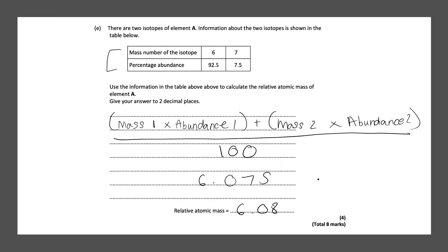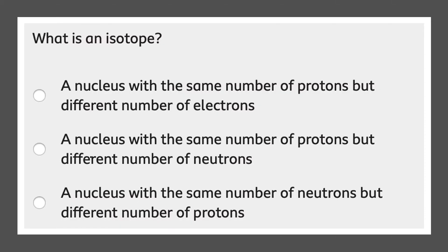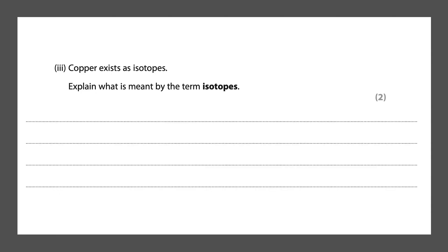But it says to two decimal places, so the answer is 6.08. Having all the correct working out would give you four marks. Next question: what is an isotope? You will get questions like this which are easy one-markers. A nucleus with the same number of protons but a different number of electrons — no, we know that it's a different number of neutrons. So: a nucleus with the same number of protons but a different number of neutrons — yes, that's correct.